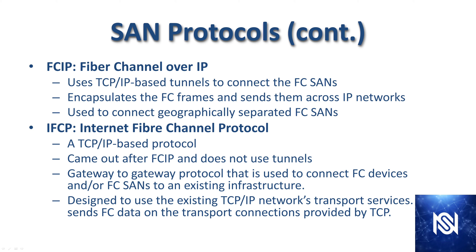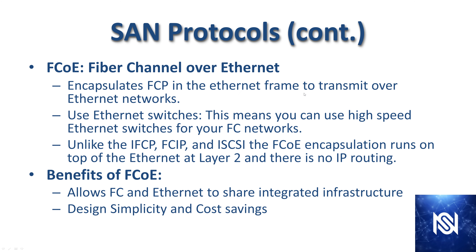After FCIP, we have IFCP — Internet Fiber Channel Protocol. This is a TCP/IP-based protocol that came out after FCIP and does not use tunnels. It is a gateway-to-gateway protocol used to connect Fiber Channel devices or SANs to existing infrastructure, using TCP/IP network transport services. Both FCIP and IFCP are designed to have Fiber Channel SANs communicate across geographically dispersed distances, but the key difference is that FCIP uses tunnels while IFCP is a gateway-to-gateway protocol.